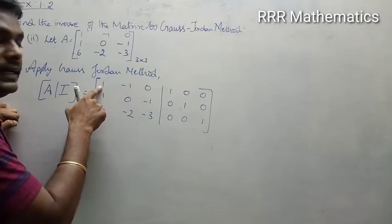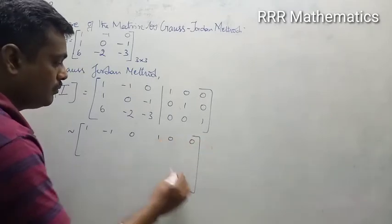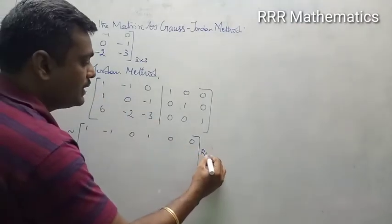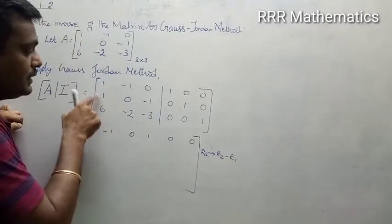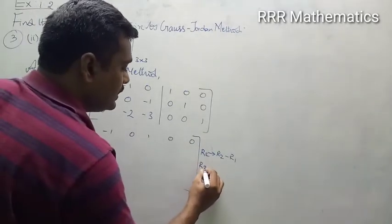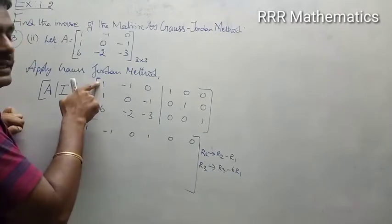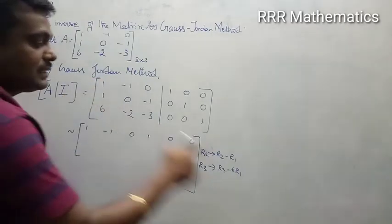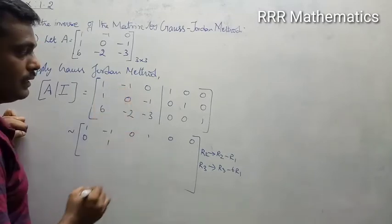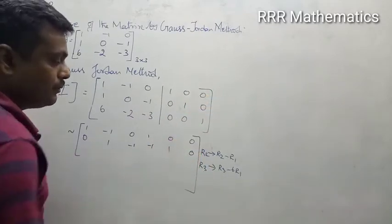Step 1: I need 1 here — already 1 is there, no problem about the first row. For the second row, I need 0 here. Both are the same sign, so I will subtract directly: R2 implies R2 minus R1. Because of the same number and same sign. I have 6 here and 1 here; when you multiply by 6 it becomes 6, and 6 minus 6 gives 0. So R2 minus R1: 1 minus 1 = 0; 0 minus (-1) = +1; -1 minus 1 = -2. For the identity part: 1 minus 0 = 1; 0 minus 0 = 0; 0 minus 0 = 0.